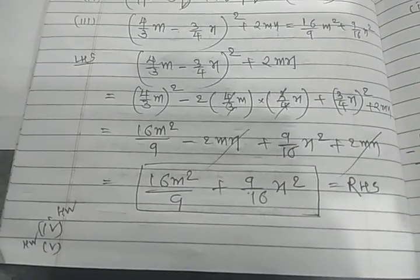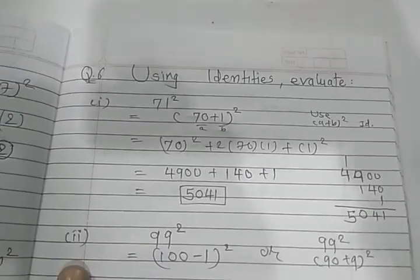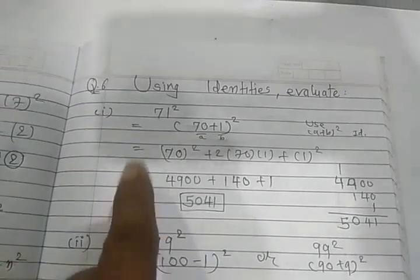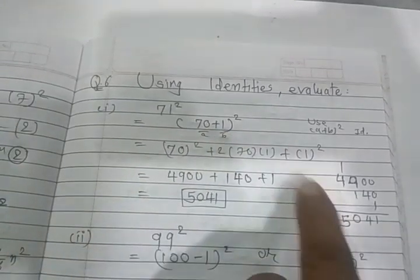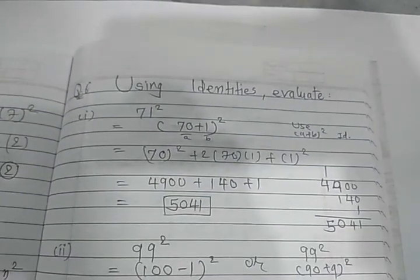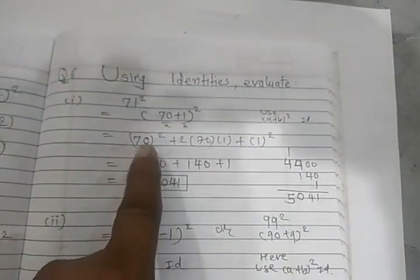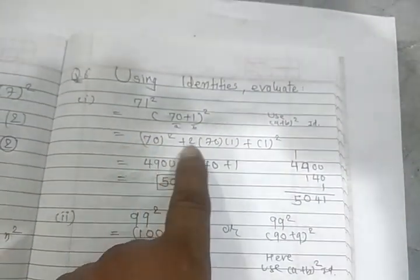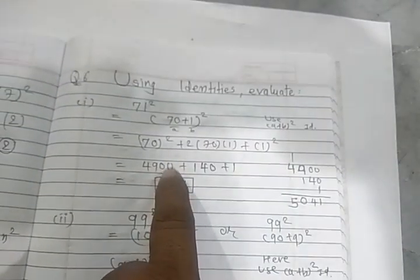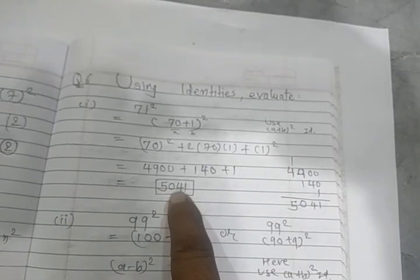Four and five it is homework for you. Question number six, using identities evaluate seventy-one square. So seventy-one means what? Seventy-one means seventy plus one whole square. So here you use which identity? a plus b whole square. So a equal to what? Seventy, b equal to what? One. So use that formula: a square plus two ab plus b square. A square means seventy square, two a, a means seventy, b means one, one square. So seven square means forty-nine, double zero, seventy whole square, seventy two, one forty plus one. So your answer will be like this way, finally you add this. Here I am doing similarly ninety-nine square. Ninety-nine square means what?